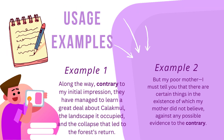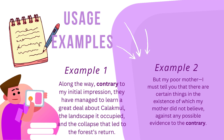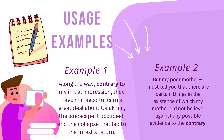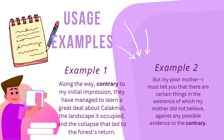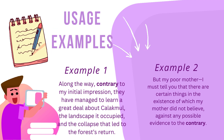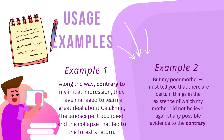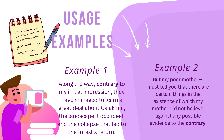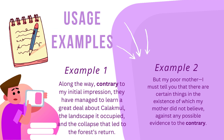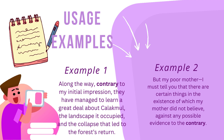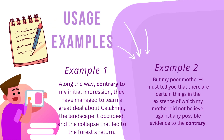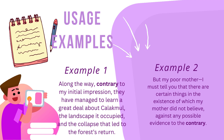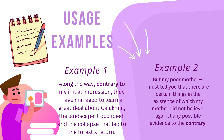Usage examples. Example 1: Along the way, contrary to my initial impression, they have managed to learn a great deal about Calakmal, the landscape it occupied, and the collapse that led to the forest's return. Example 2: But my poor mother — I must tell you that there are certain things in the existence of which my mother did not believe, against any possible evidence to the contrary.